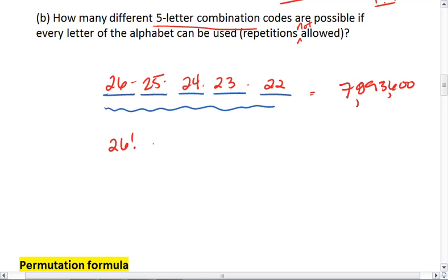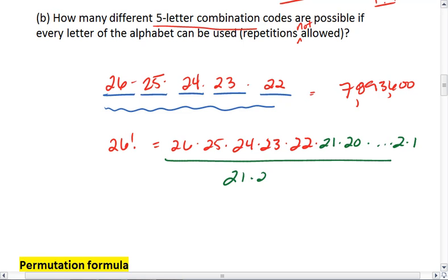But 26 factorial continues down to 21, 20, all the way down to 1. To get rid of those numbers, we need to divide by 21, 20, 19, and so on, all the way down to 1. So we divide by 21 factorial.